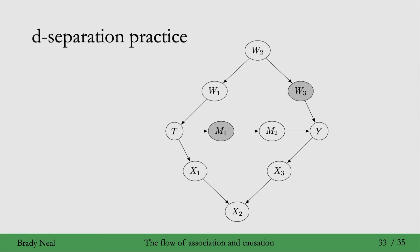What about if we were to also condition on W2 in addition to M1 and W3? It turns out that that doesn't change anything, and T and Y are still d-separated given those variables.